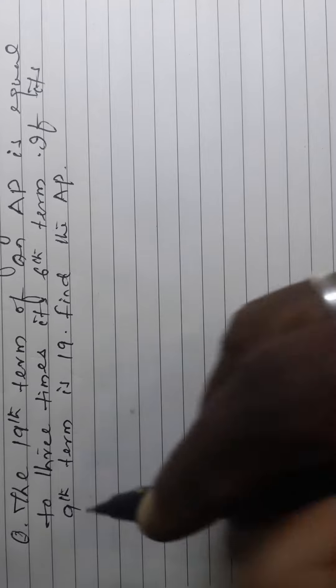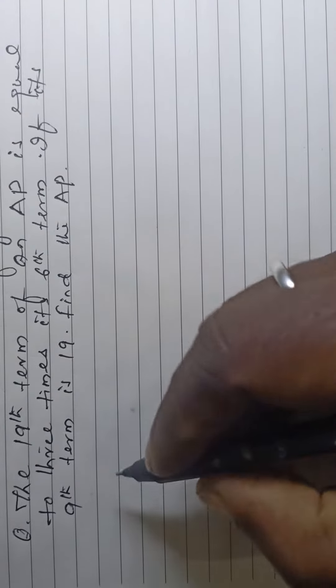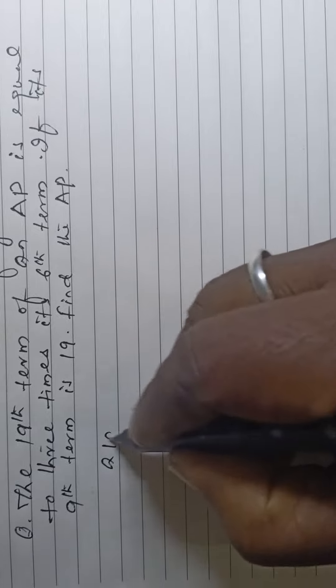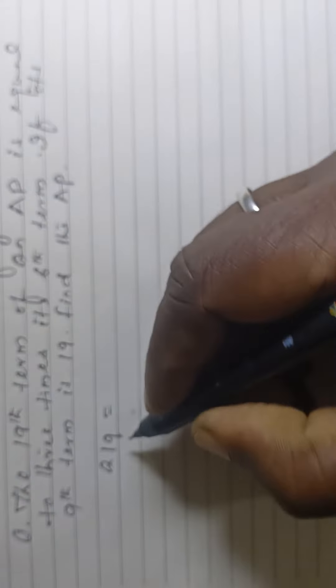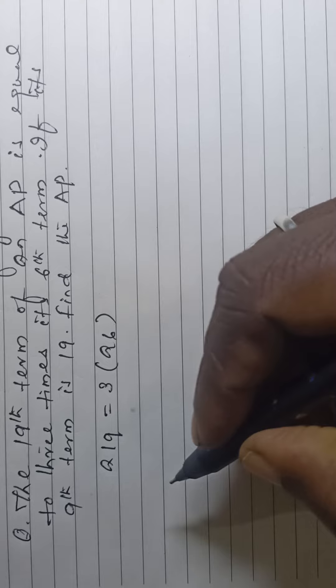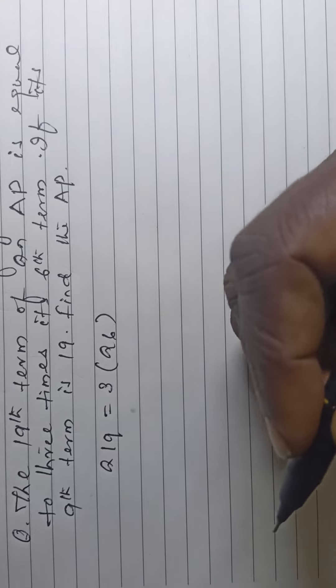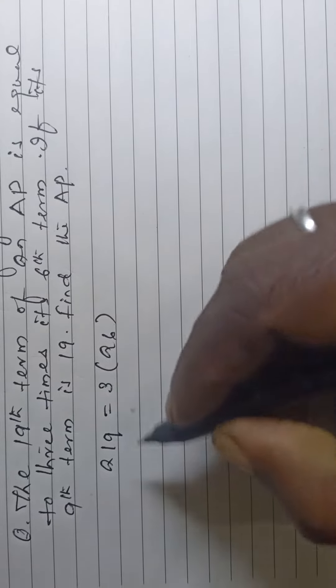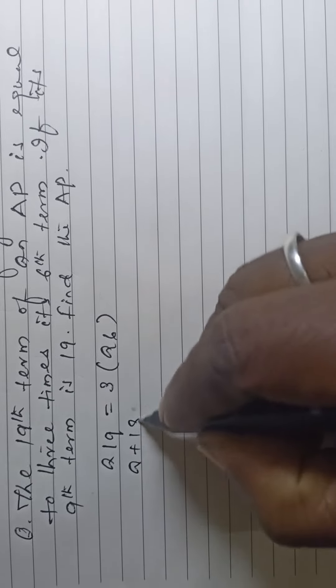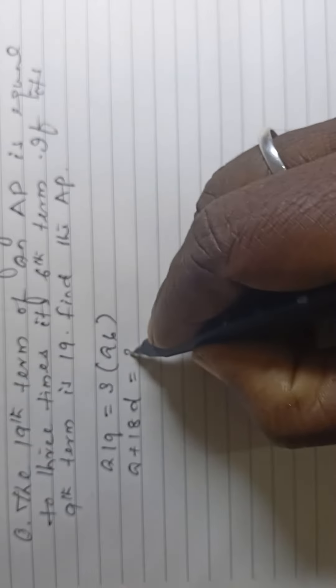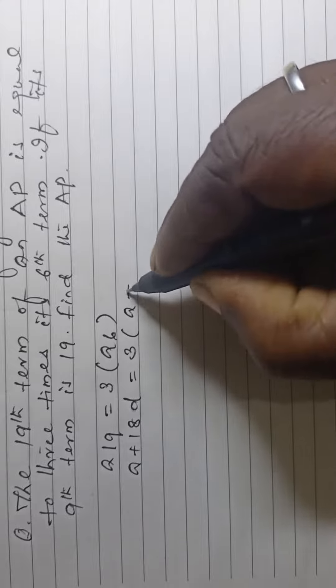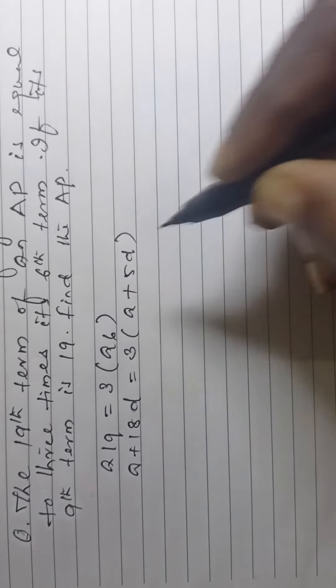Now, according to the question, a19 is equal to 3 into a6. So, the formula is an equals a plus n minus 1 into d. So, a plus 18d is equal to 3 into a plus 5d.